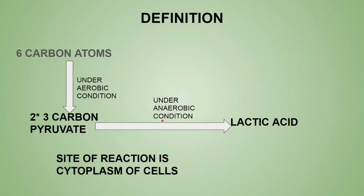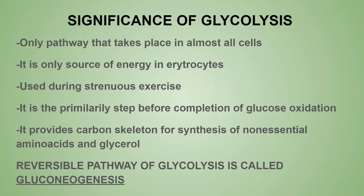The main site of the glycolysis pathway is the cytoplasm of almost all cells of the human body. Its significance: it is the only pathway that occurs in virtually all body cells, and it is the main source of energy in red blood cells (erythrocytes).